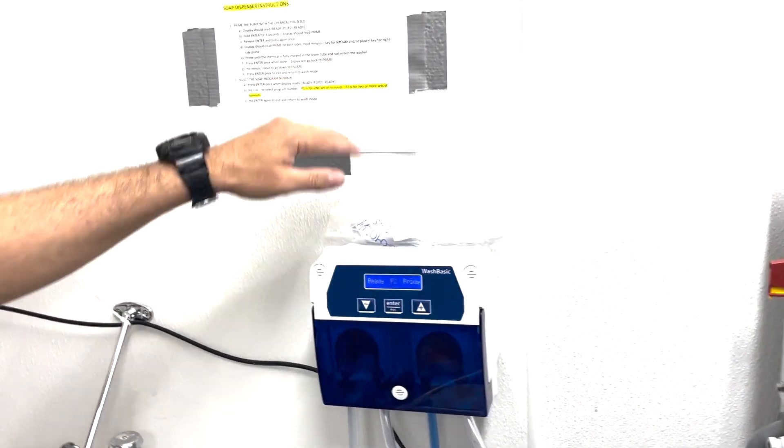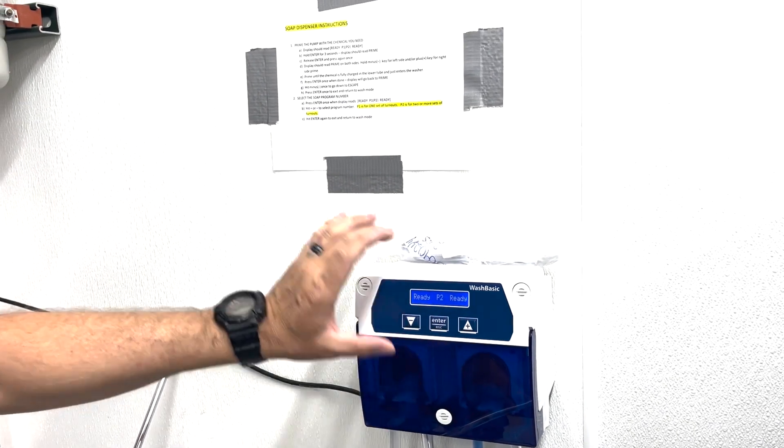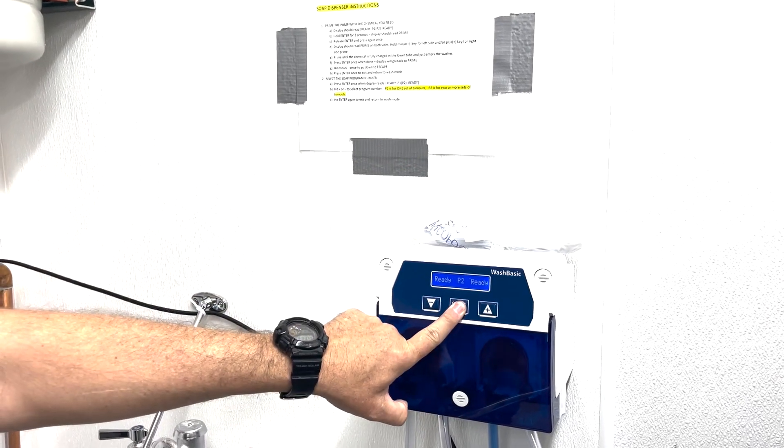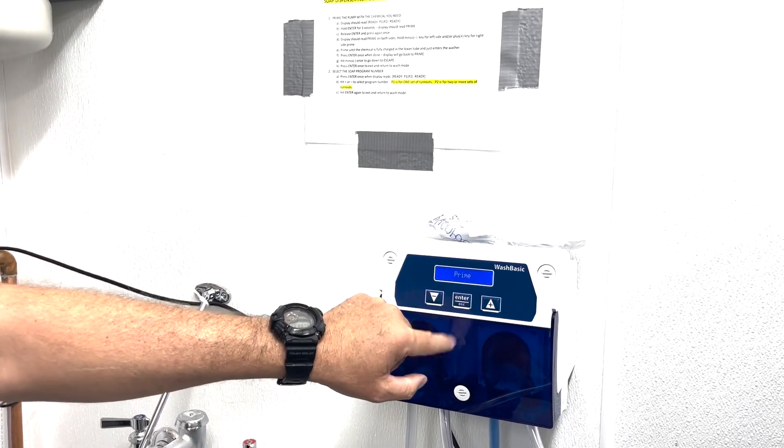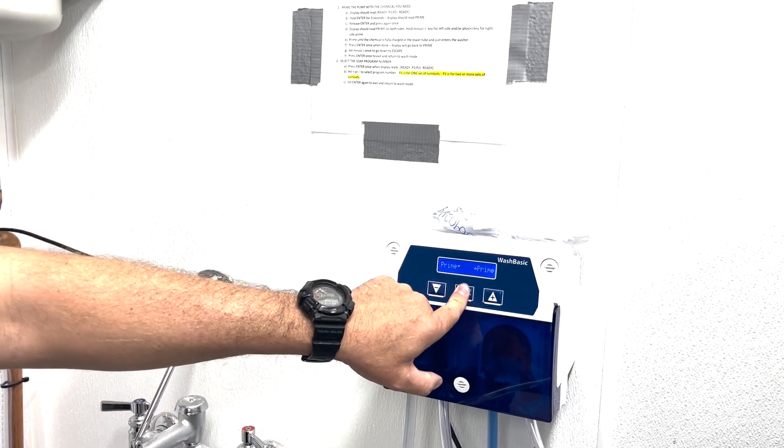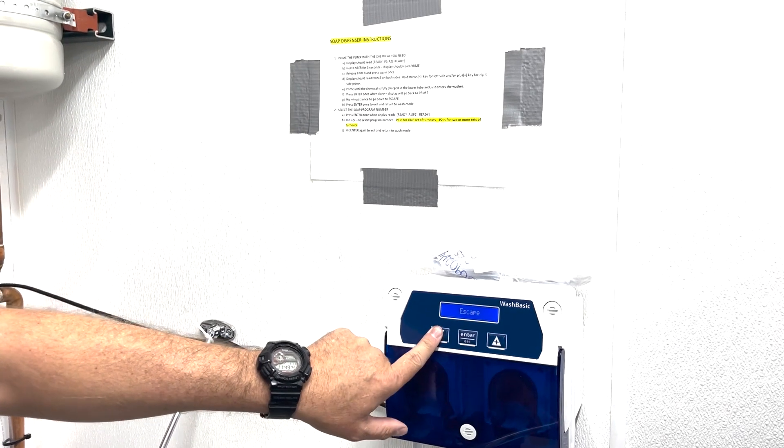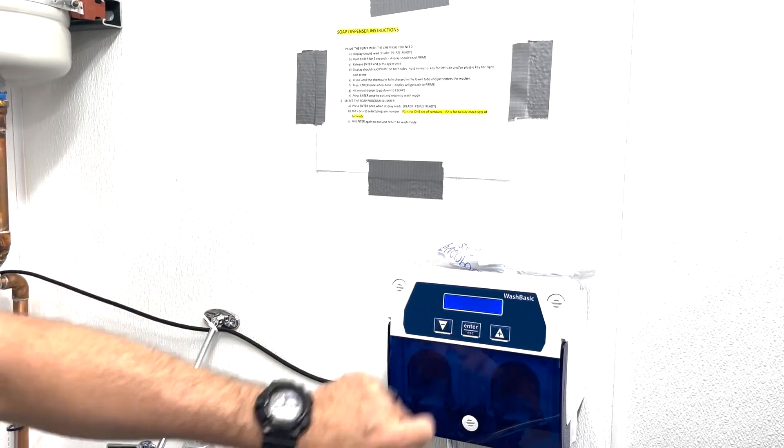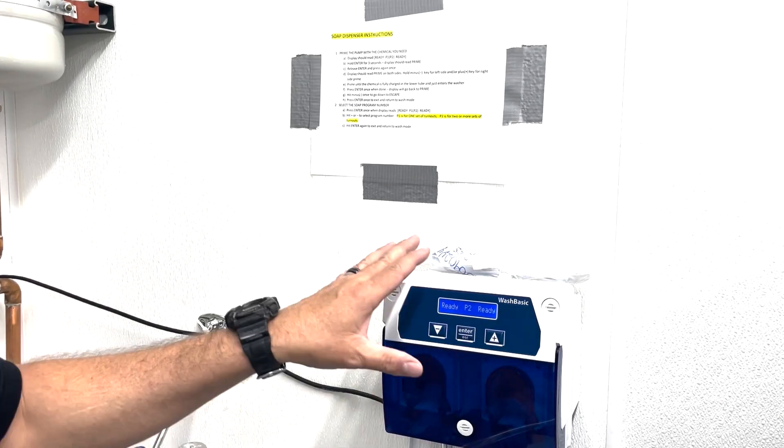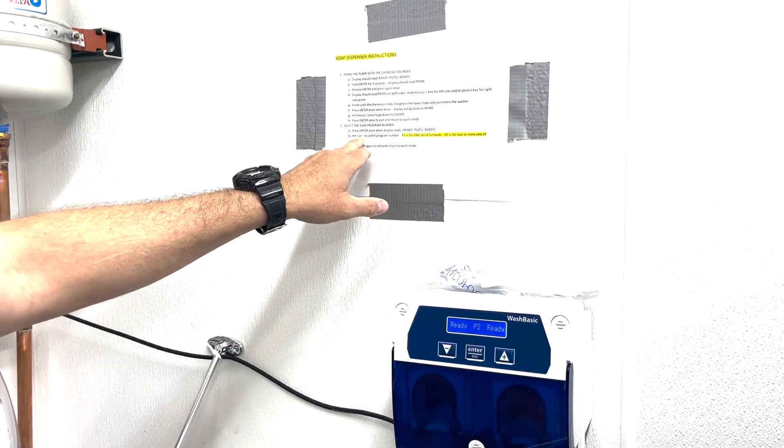At this point, hold the plus and plus key for the left side and the right key. If you wait too long, it'll automatically go back to normal. Let's pretend that we were still in prime mode and we wanted to exit. We're priming left to right—just hit Enter again. It'll go back to Prime. Then hit the minus key to go down to Escape, and then hit Enter. That's it.